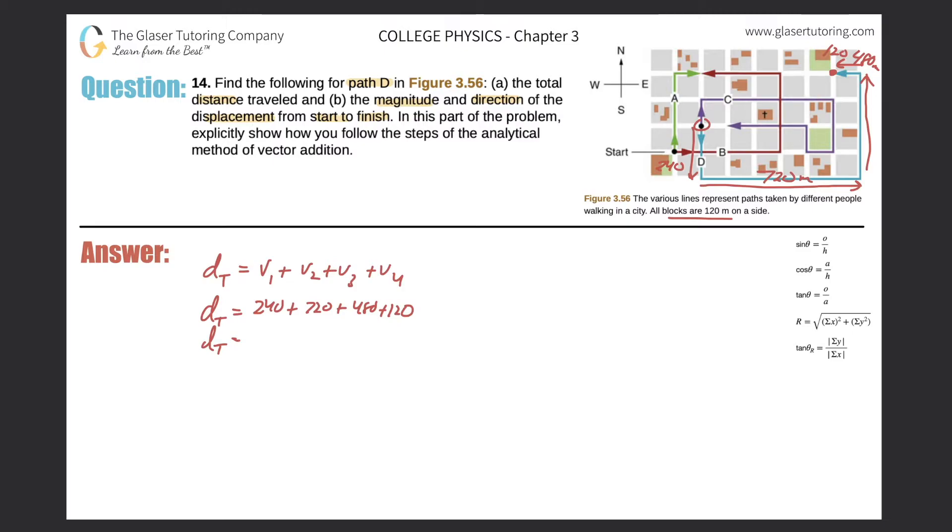So the total distance that we moved is going to be 240 plus 720 plus 480 plus 120. So 1560 meters. So we've got 1560 meters. That's the total distance. That's what your car would have read.